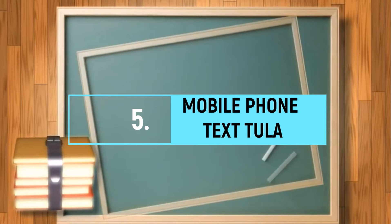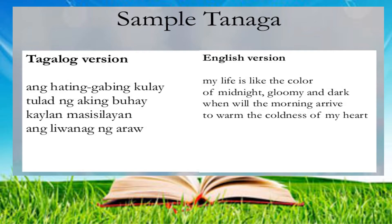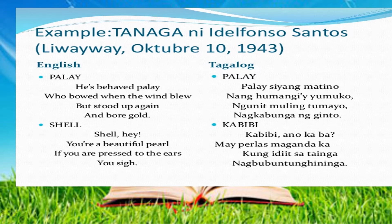The next genre is mobile phone textula. It is a Filipino tanaga, usually four lines with a 7-7-7-7 syllabic count and a rhyme scheme of AABB, ABAB, or ABBA. This poetry format was first sent through cell phones in the early 21st century as a form of a game. Here is a sample tanaga by Idelfonso Santos.